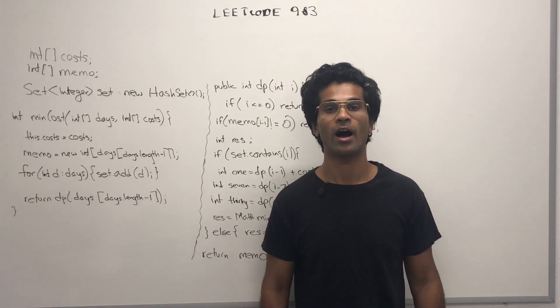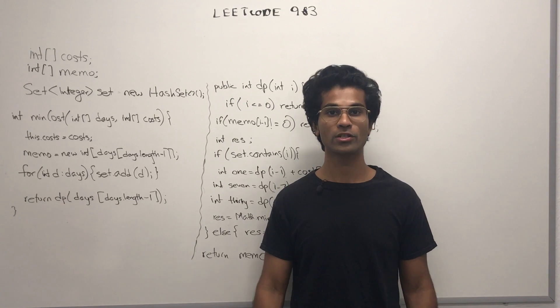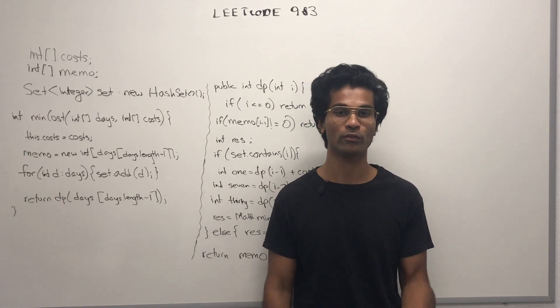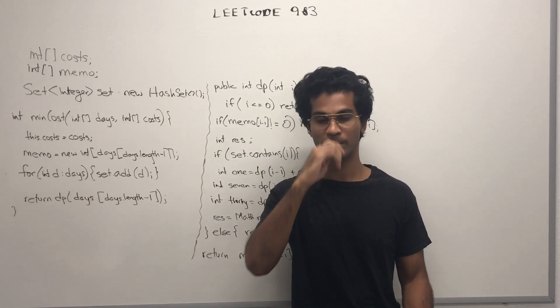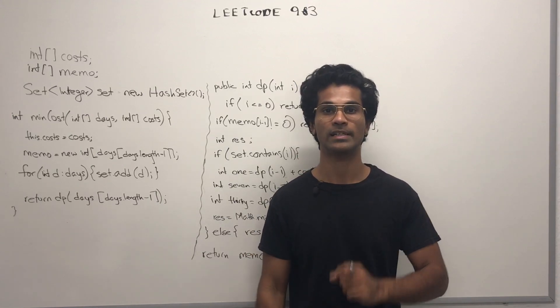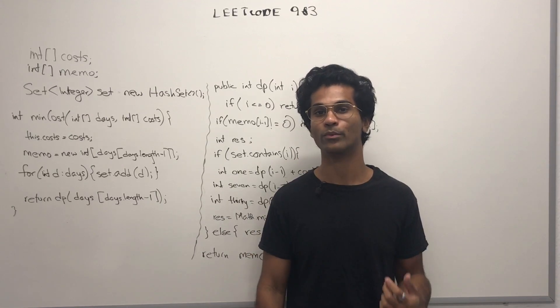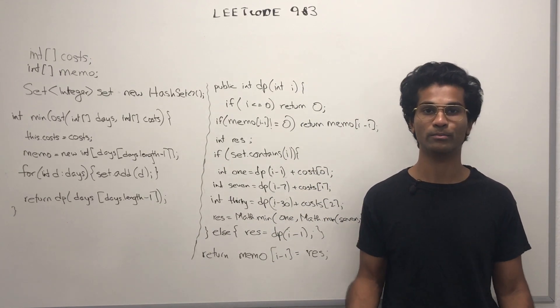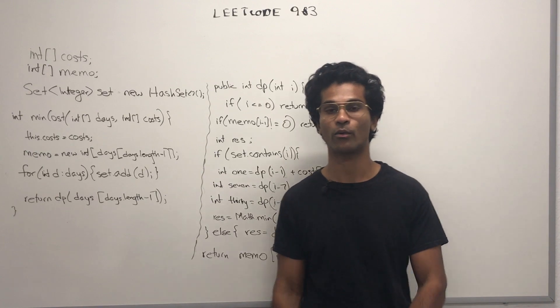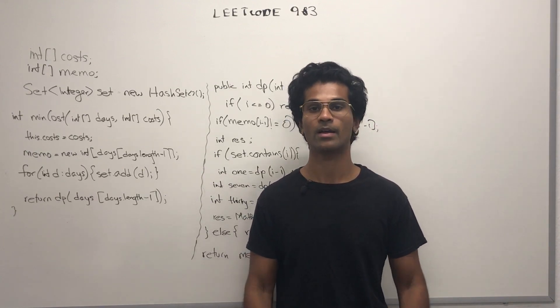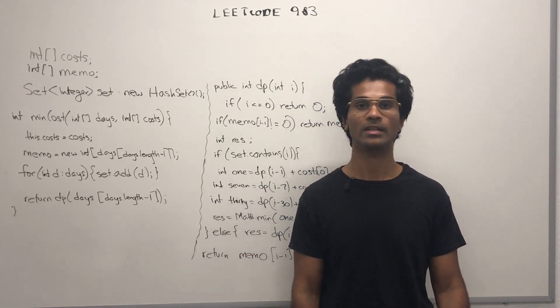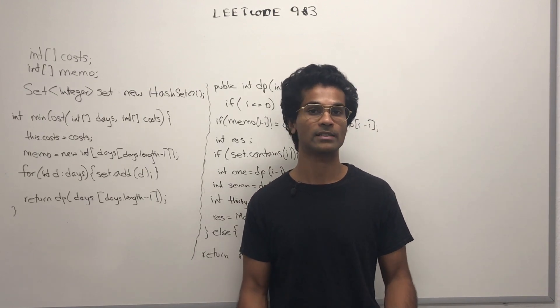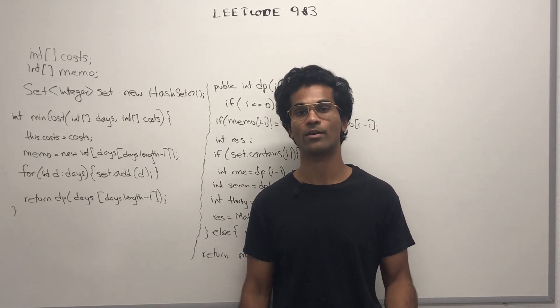Now, let's look at the code. I've written a few global variables. First, a set of integers to keep track of the actual days that we want to travel. We'll use this when we use our dp function and query to see, is this specific day a day that we need to travel or not? I've also created an integer array called memo, which is going to cache our recursive function results. The length of that array is going to be equal to the last day that we need to travel. So, if the last day we need to travel is 20, the length of that array is going to be 20.